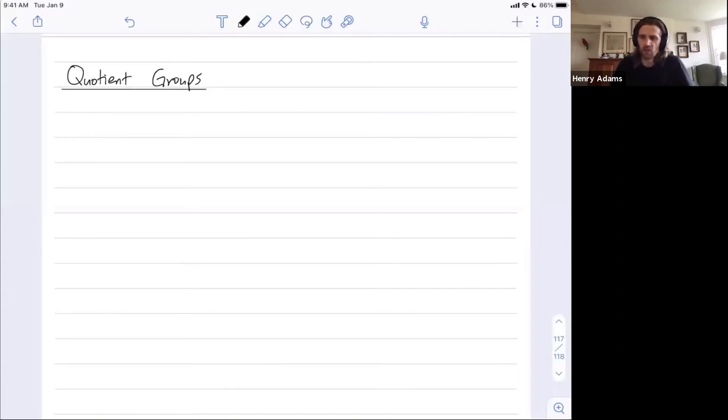You've heard a little bit about the direct product or the direct sum of groups. Z2 direct sum Z2 is an example of taking two groups and combining them to get a larger group. Quotient groups are a way of making a group smaller. You take a group and sort of divide out or mod out by something to make it smaller in a way that can elucidate the structure of that group.